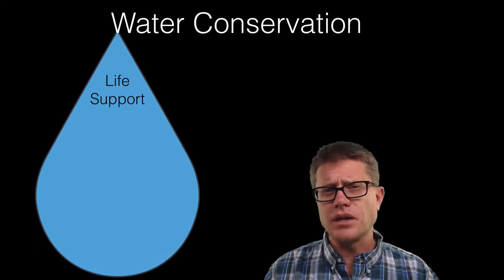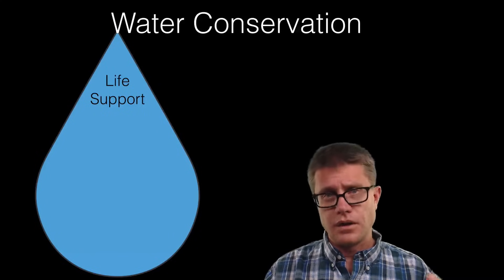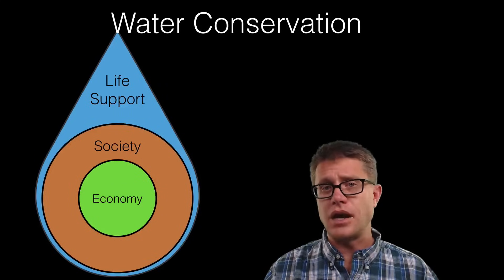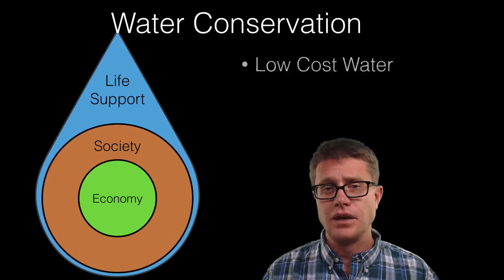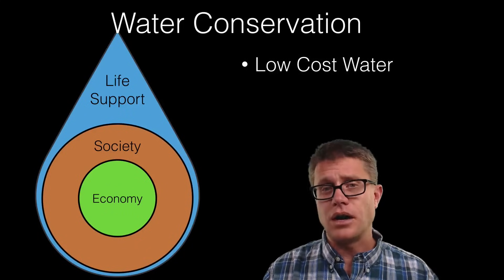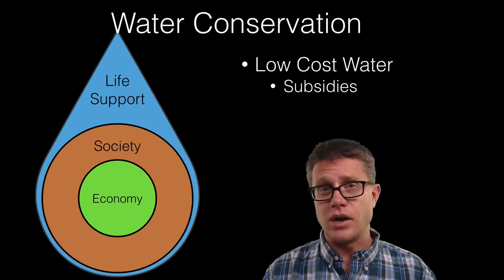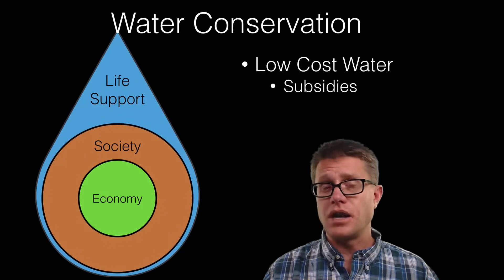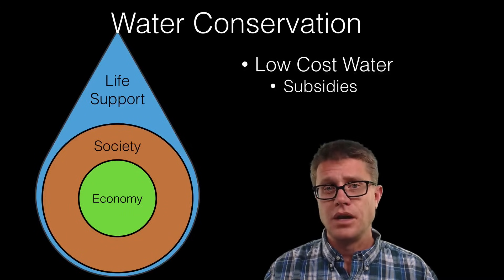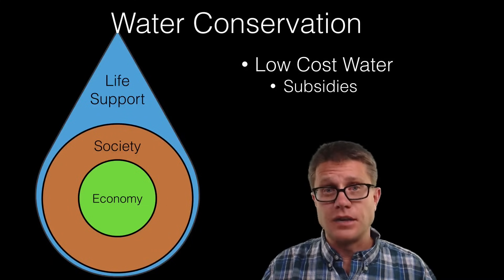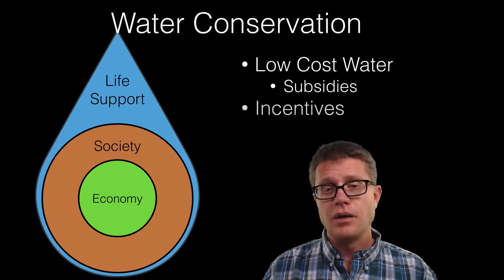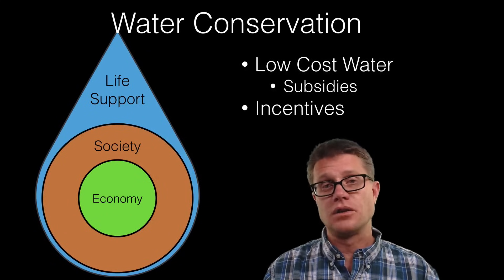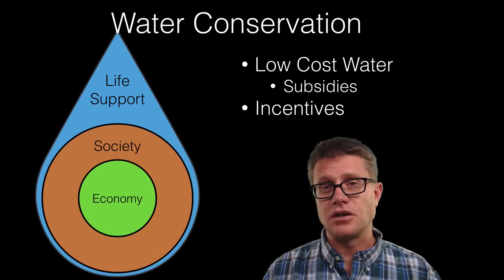How did we get to this problem? It seems like we have an unlimited amount of water. The economy and government decisions got us to this point. The big mistake is that water does not cost enough — governments are subsidizing the cost of water, so farmers, industry, and consumers are not paying what water really costs. As a result, people are not conserving because water is incredibly cheap. To solve this, we could increase the price of water so people start to conserve. We can also use incentives, paying farmers for example to use more efficient irrigation or to conserve water.